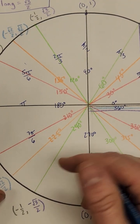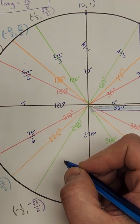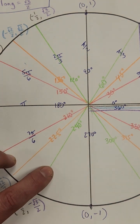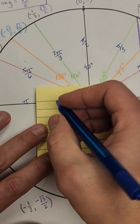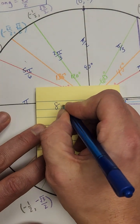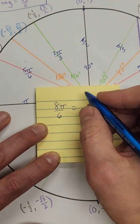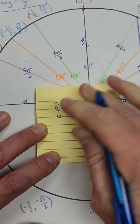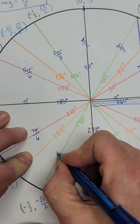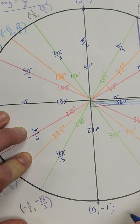Going down to this one over here, this would be our eighth sixth. I want to reduce that — eight π over six. Two goes into both of those, so that reduces to 4π/3. So this would be 4π/3 radians.